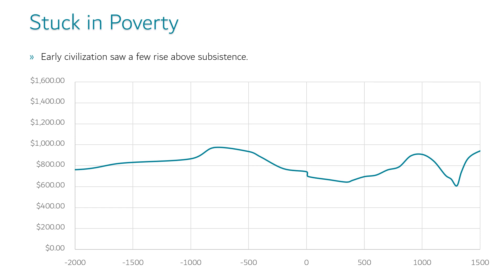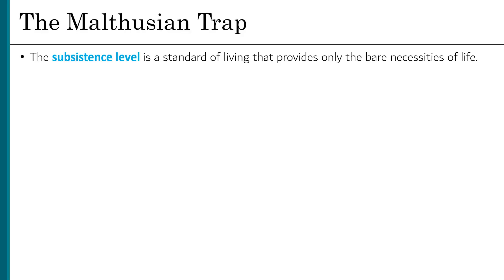The typical person in these times was living on just a few dollars per day by today's standards. So why, with all of this progress, was humanity stuck in poverty? The answer is the Malthusian trap.